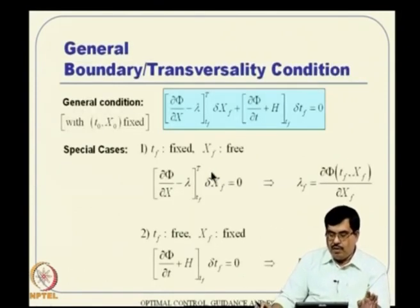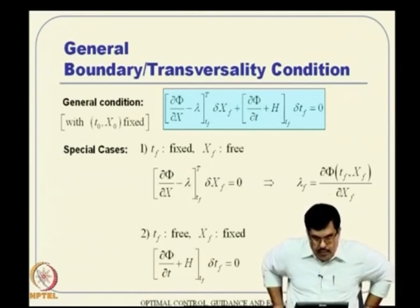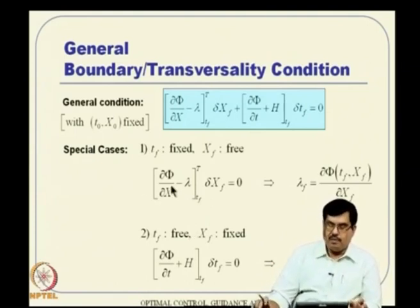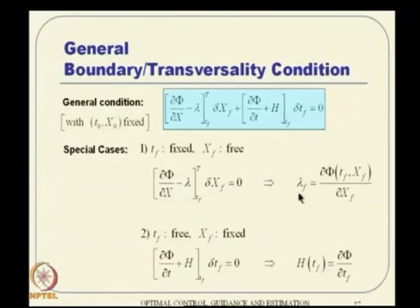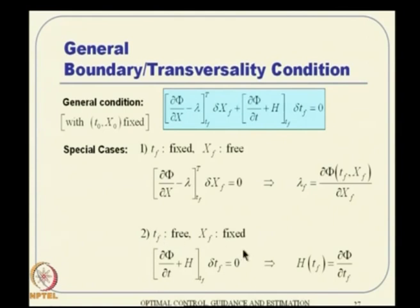Returning to general boundary conditions: similar to the calculus of variations discussion, we derive transversality conditions for various cases. Case 1: t_f fixed — lambda_f = del-phi / del-x_f. Case 2: t_f free, x_f fixed — H(t_f) = −del-phi / del-t_f. These are the two most common cases in practice, and we apply them as needed in specific problem formulations.